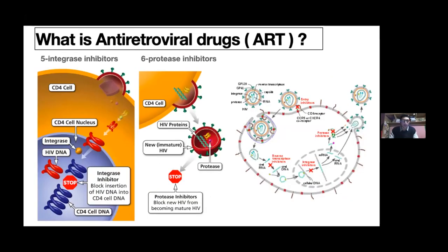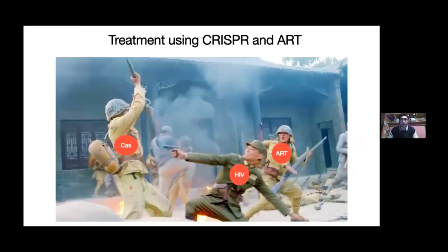The fifth type is integrase inhibitors. These inhibit the integrase enzyme activity, so the HIV DNA cannot integrate with the DNA of the CD4 cell and cannot form proviral DNA. The last type is protease inhibitors. Protease inhibitors inhibit the protease enzyme, whose function is to cleave polypeptide chains to produce HIV proteins. So HIV cannot form new HIV viruses.